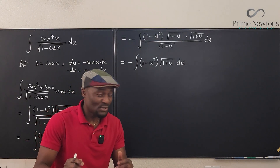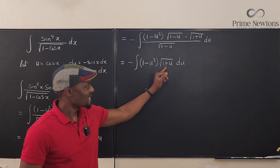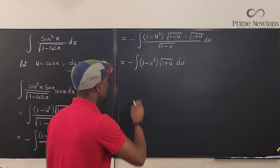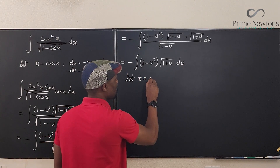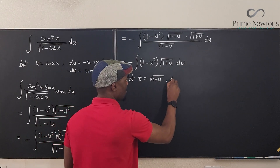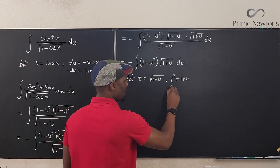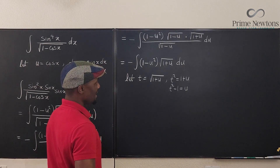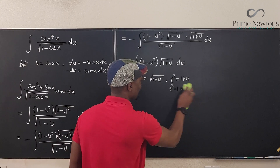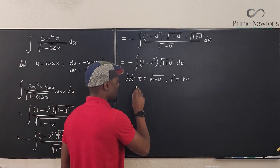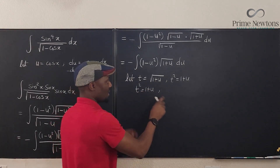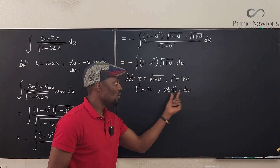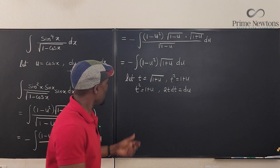What we have left is just the negative of the integral of 1 minus u squared multiplied by the square root of 1 plus u, du. Now it looks a lot easier, but it's not yet a polynomial. We can make a second substitution: let t equal the square root of 1 plus u. Then t squared equals 1 plus u, so t squared minus 1 equals u. Differentiating both sides gives 2t dt equals du.